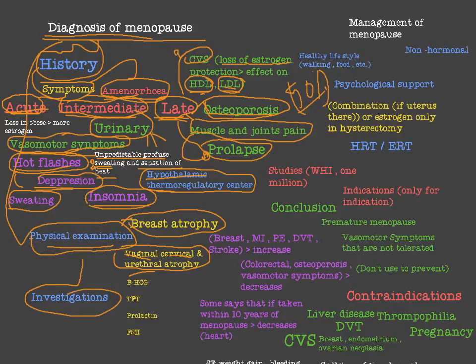After physical examination, we move to investigations. First, always check beta-hCG — even in older patients presenting with amenorrhea, you must rule out pregnancy. Thyroid function tests should be done because hyper- and hypothyroidism cause menstrual irregularities. Check prolactin levels for the same reason. FSH level is diagnostic — in menopause, FSH will be elevated above 40. Other routine investigations should also be ordered.